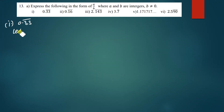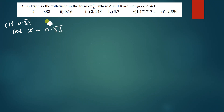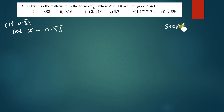We say: let x be equal to 0.33. Step one — move the decimal point closer to the repeating number.